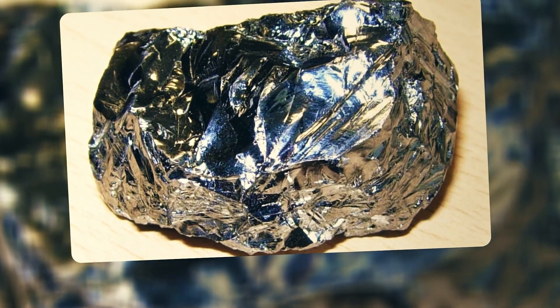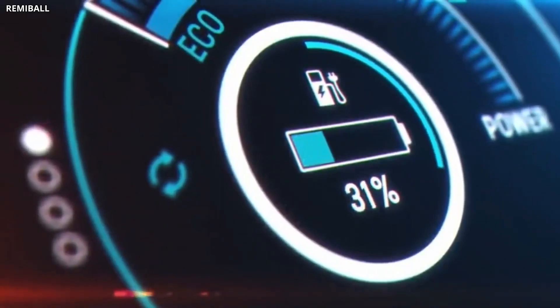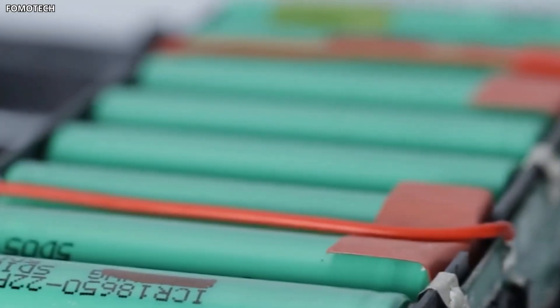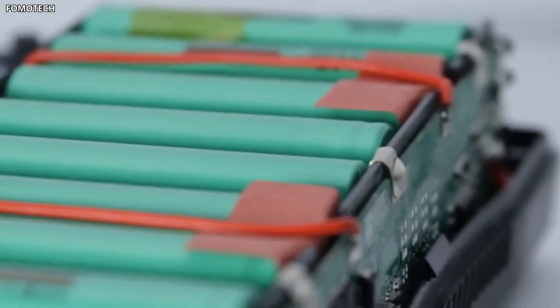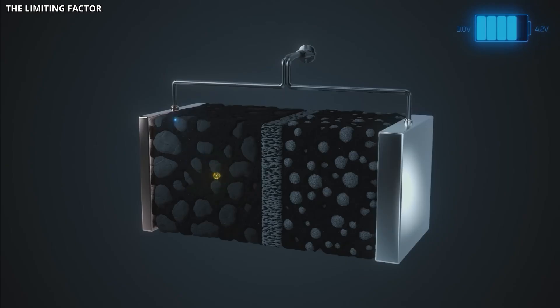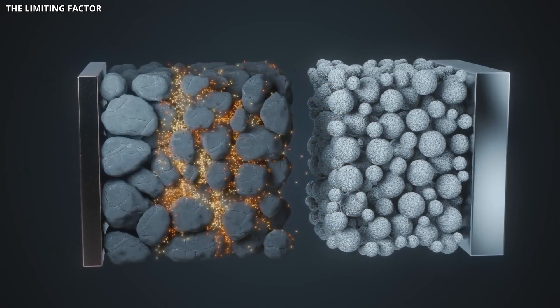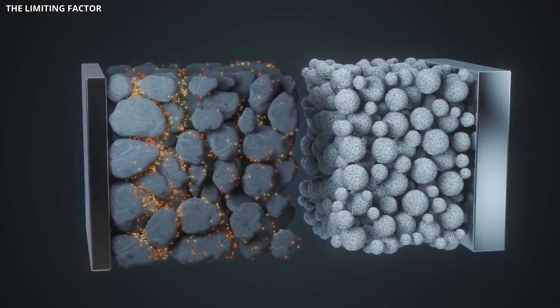Graphene can also be mixed with silicon, which stores more lithium than graphite, but tends to swell and crack during charging. Graphene's flexibility helps stabilize silicon, preventing it from breaking apart and extending the battery's life. On the cathode side, adding graphene improves conductivity and heat dissipation. This means the battery can handle higher currents without overheating, which is critical for fast charging.